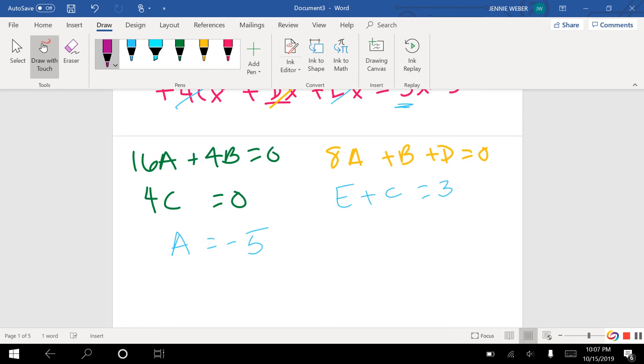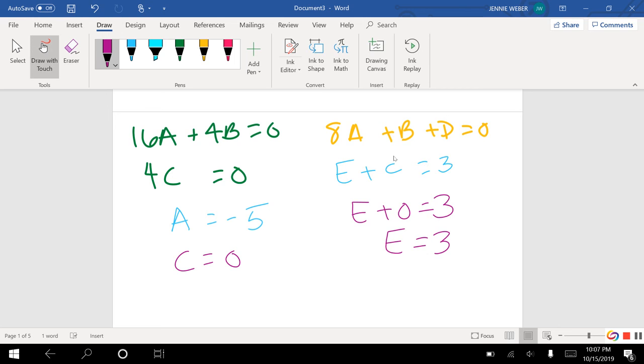I also know what C is, because 4C equals 0 has to be 0. So C equals 0, which means then E plus 0 equals 3. So then E equals 3.